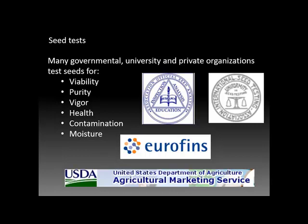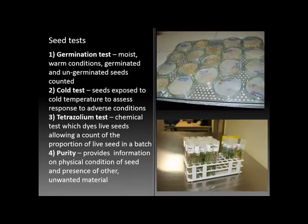Germination tests are usually conducted under moist, warm conditions, and the relative number of germinated and un-germinated seeds are counted to determine the viability or germination ratio. In cold tests, seeds are exposed to cold temperatures to assess their response to adverse conditions. The tetrazolium or TZ test, which we conducted in our last lab, is a chemical test where live seeds are detected by counting the proportion of potentially live seeds in a batch. The purity test gives information about the physical condition of seed and the presence of unwanted materials.